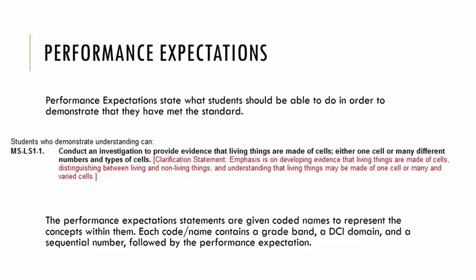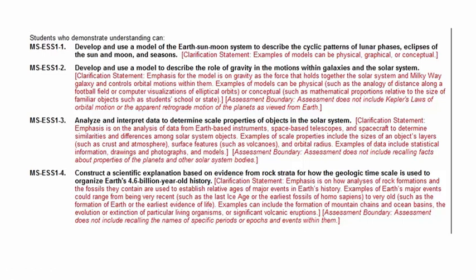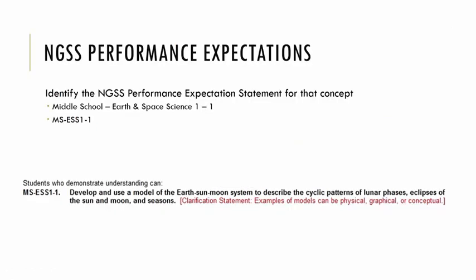The performance expectation statements are given coded names to represent the concepts within them. Each code name contains a grade band, a disciplinary core idea domain, and a sequential number. Within the middle school or MS grade band, the domain can be identified by a series of letters — earth and space science is represented by ESS. Reading through the ESS performance expectations, our concept can be located and has been identified as part of the MS-ESS1-1 performance expectation.